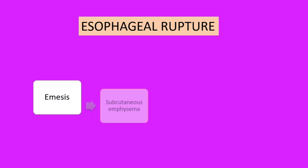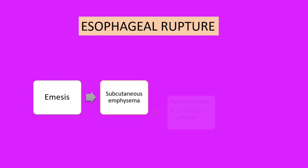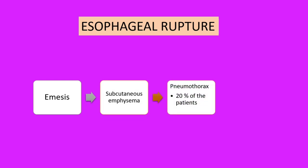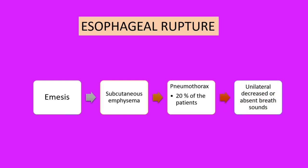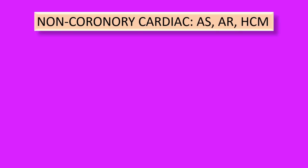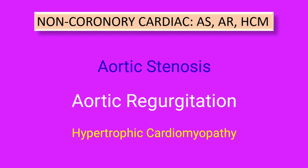Esophageal rupture can present with acute onset chest pain in the emergency department. These patients can present with emesis, subcutaneous emphysema, and pneumothorax, which is present in up to 20 percent of patients, along with unilateral decreased or absent breath sounds.